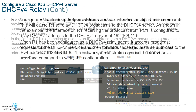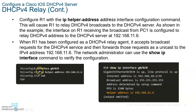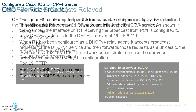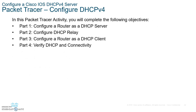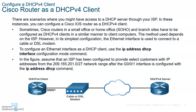The command is: interface G0/0 (your default gateway interface), then 'ip helper-address 192.168.11.6' — that's the IP address of the DHCP server on the other side. Note that ip helper-address doesn't only relay DHCP info; it can also relay time, TFTP, DNS, and NetBIOS information.